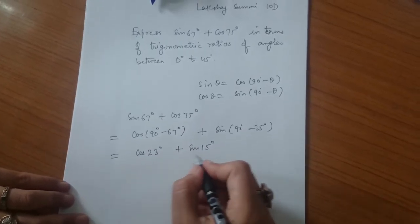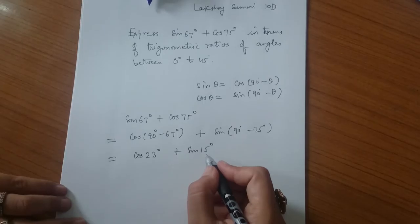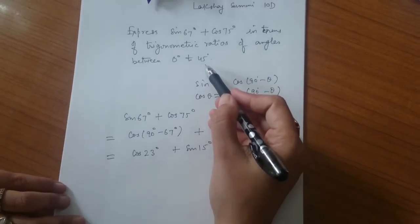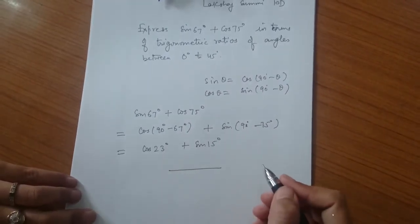We get trigonometric ratios of 23° and 15°, which are between 0° and 45°. Good job. Thank you.